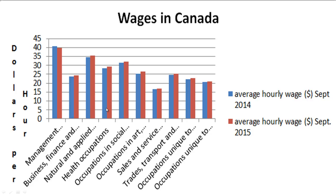Health occupations is one of the higher wage categories — people working in the health field. Occupations in social science, education, government service, and religion are all grouped together, and that's actually the third highest of all the occupation categories. Those are some key observations about this particular dataset.